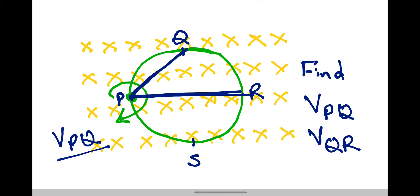We have VPQ and VPR to find. VPQ equals VP minus VQ, and VPR is the other equation we need.